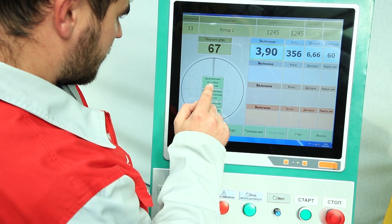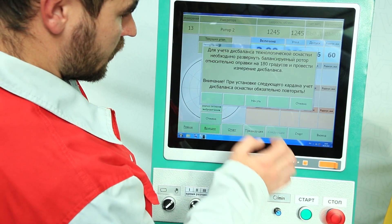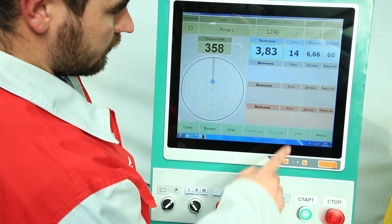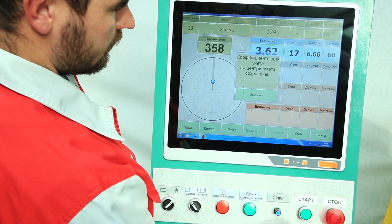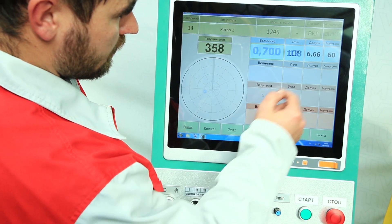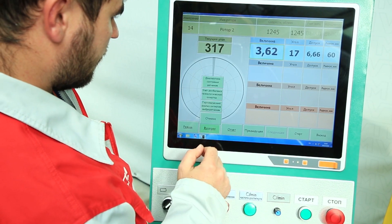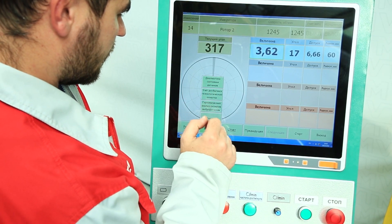In some cases, for proper balancing, it is necessary to take into account the eccentricity of the tooling, for example, when balancing shafts with end slots. The machine has a special function in the menu to compensate for the eccentricity of the tooling. When replacing the gimbal, it will be necessary to repeat the accounting of the eccentricity of the tooling.